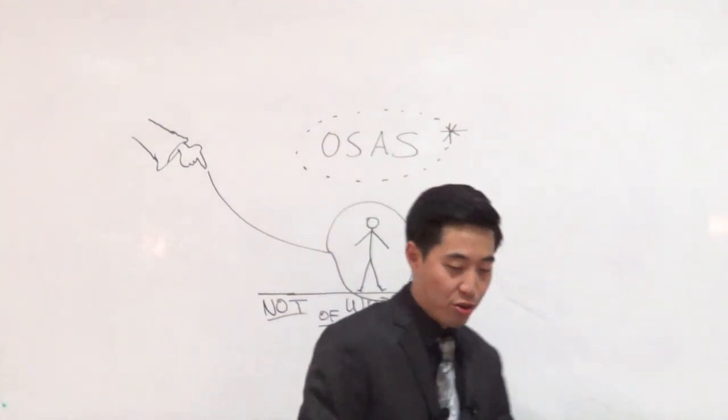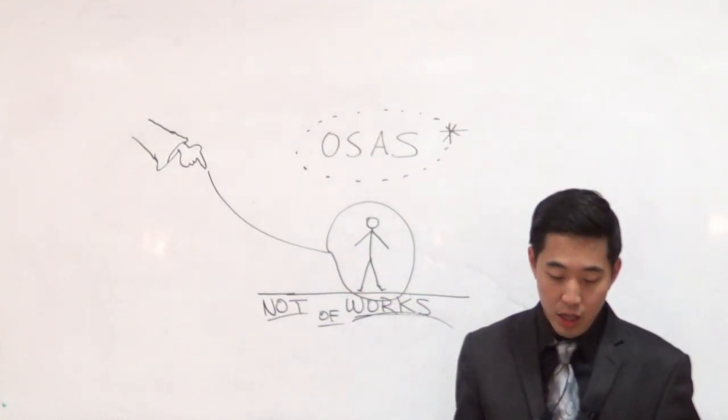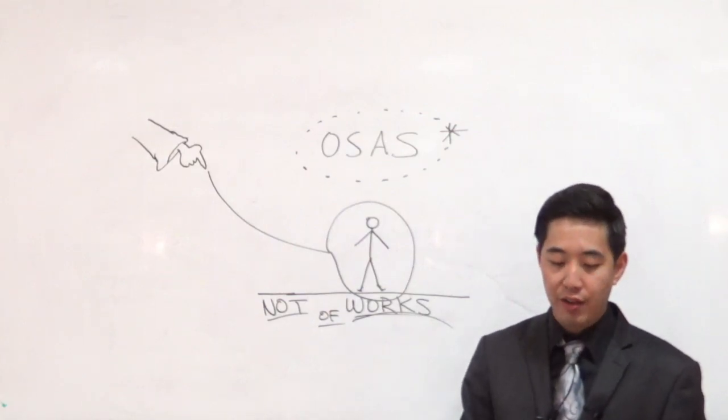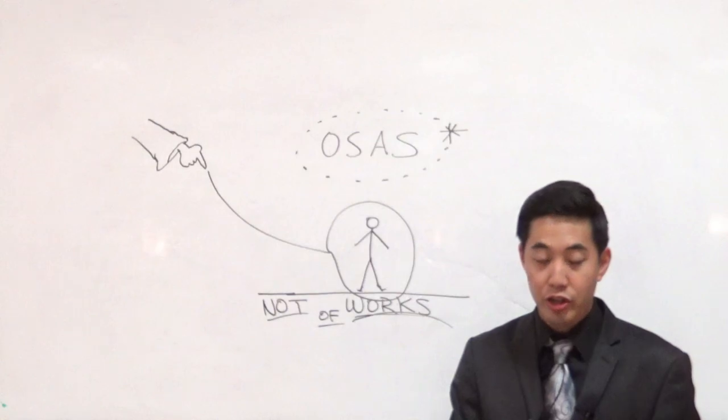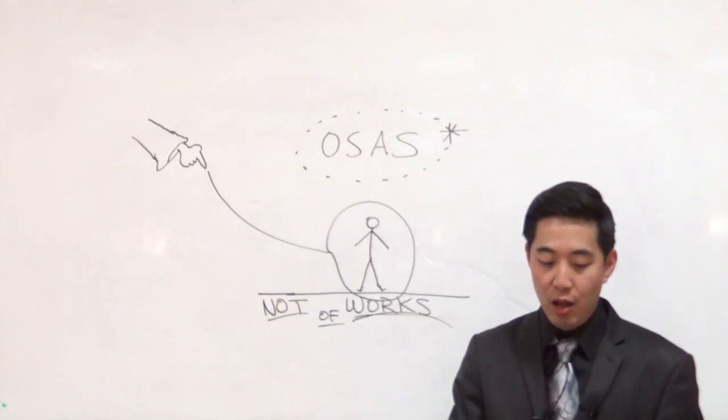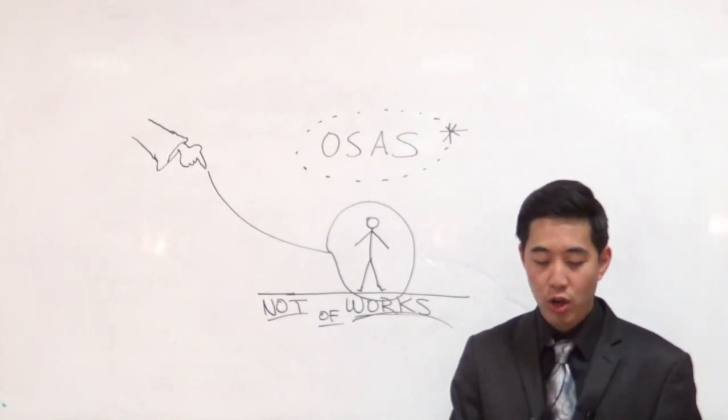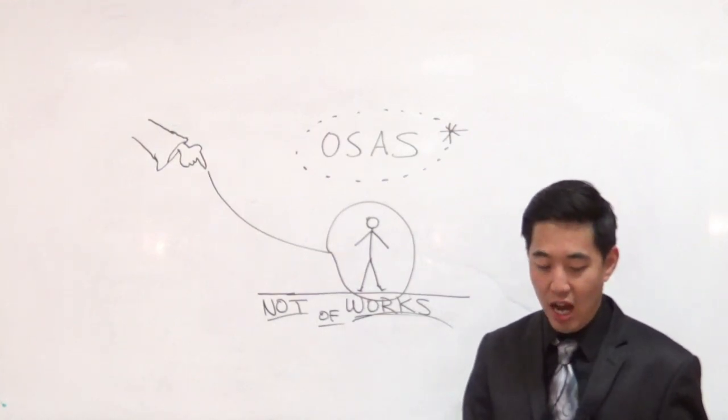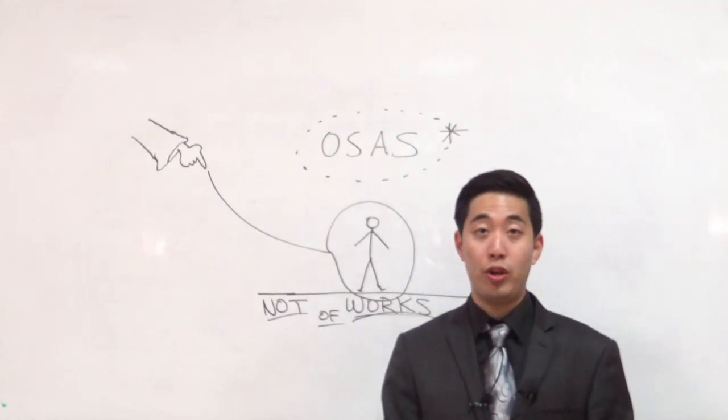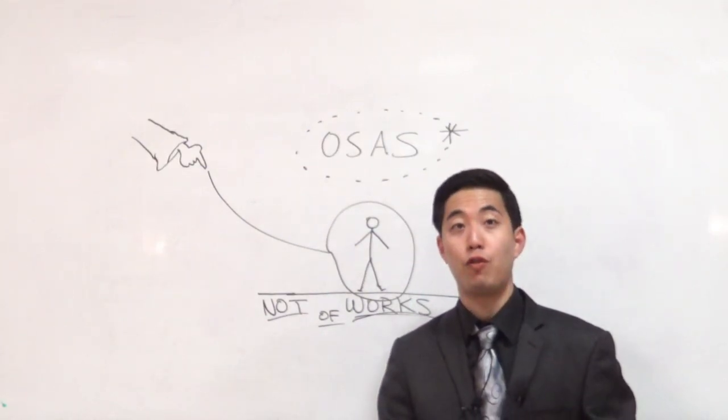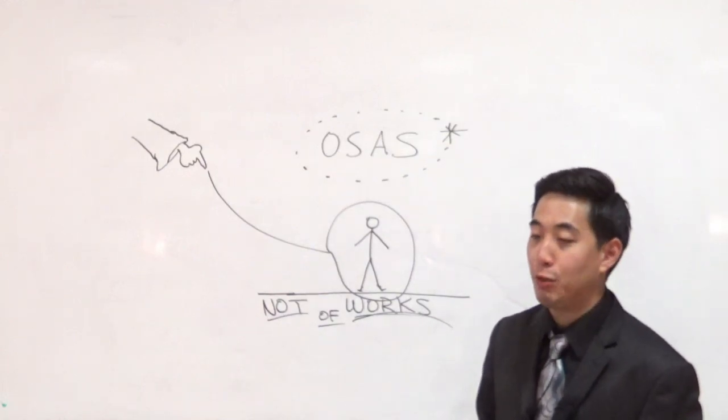Now, let me explain it in this manner. First of all, let's go to 1 John 5:13. The Bible says, These things have I written unto you that believe on the name of the Son of God. Did you believe? Yes, sir. That ye may what? You know that ye have what kind of life? Eternal life. And that ye may believe on the name of the Son of God. That verse is a very famous verse on eternal security that should be memorized. 1 John 5:13. But it has been the most attacked.